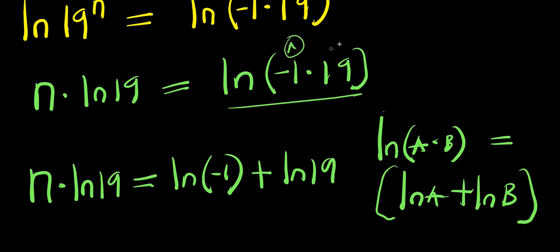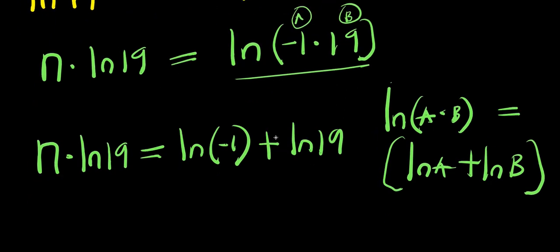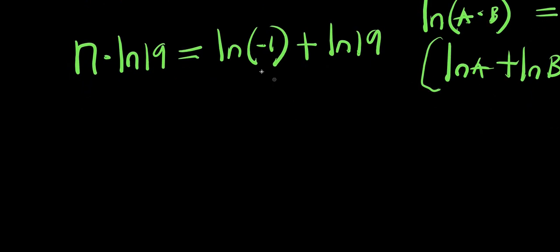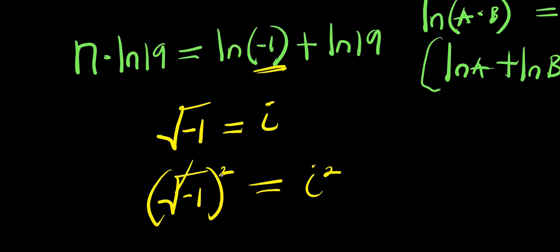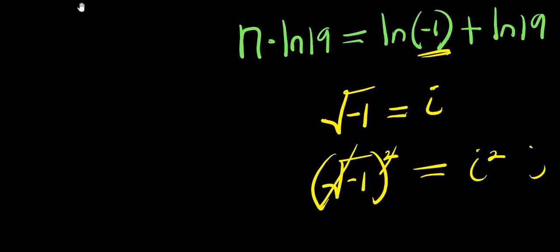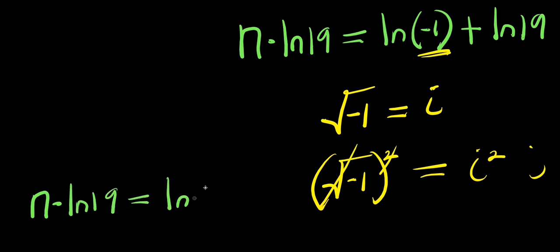We know that the square root of negative 1 equals i. If we square both sides, negative 1 equals i squared. So we have n times natural log of 19 equals natural log of i squared plus natural log of 19.